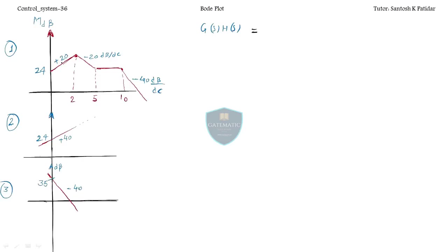The initial slope is plus 20 — wait, it's plus 40. So it's k always, and s to the first power — why? Plus 20. Okay, this one is over. The next corner frequency is at ω=2. At that corner frequency, the slope changes; the new slope is minus 20.